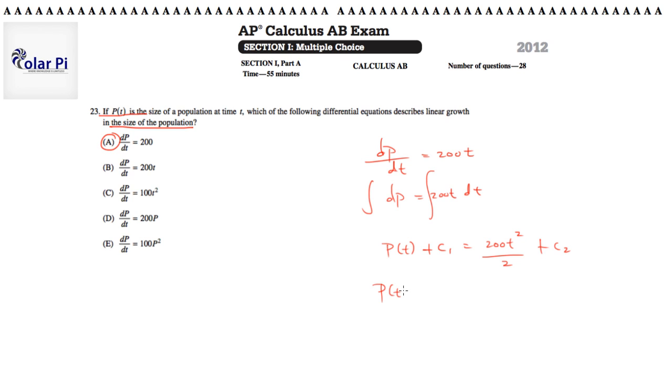And of course, we could say that p of t is equal to 100t squared plus k, where we combine the two constants, c2 and c1, as k, where we claim that k is equal to c2 minus c1. This is an unnecessary detail, but you get it.